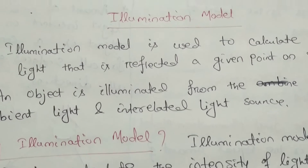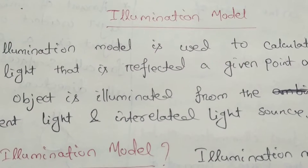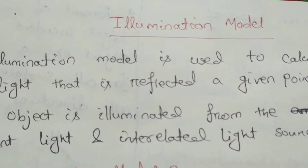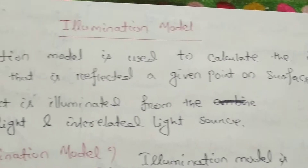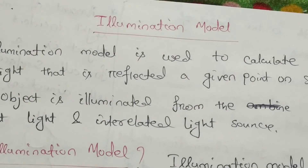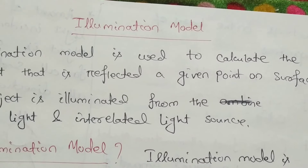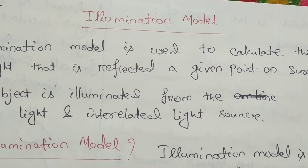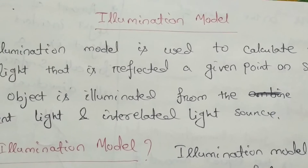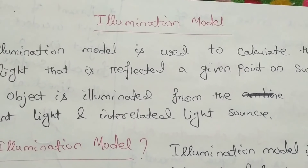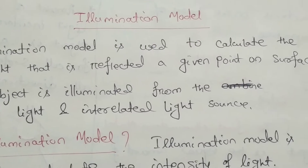Namaskar everyone. Today we will study an important chapter of computer graphics, that is illumination model. Illumination model is used to calculate the intensity of light that is reflected at a given point on the surface. Intensity of light means the light that is observed or reflected by the object.